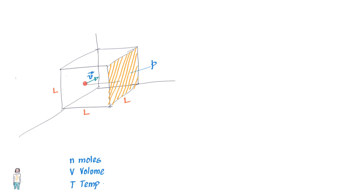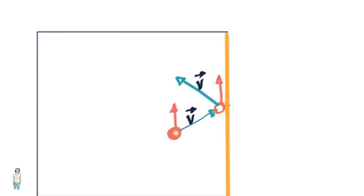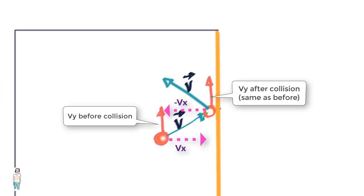So take this molecule that has mass m and velocity v and is about to collide with this face of the wall. What you can see here is that the y component of the velocity is not changing after the collision but the velocity does change in the x direction which actually gets reversed.